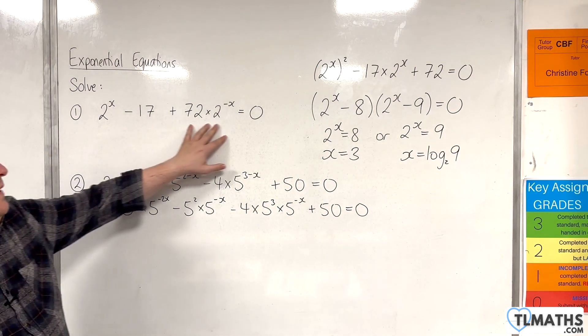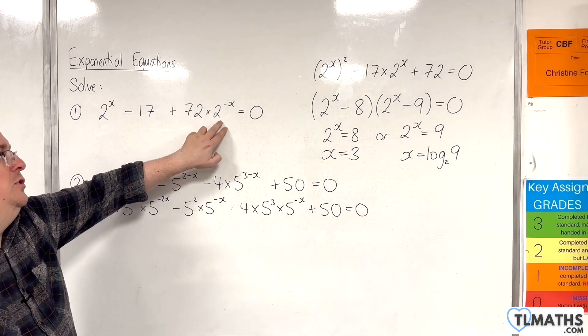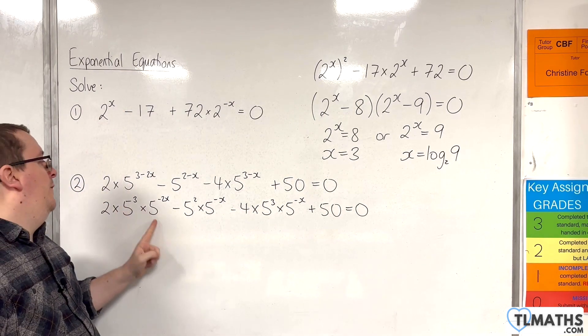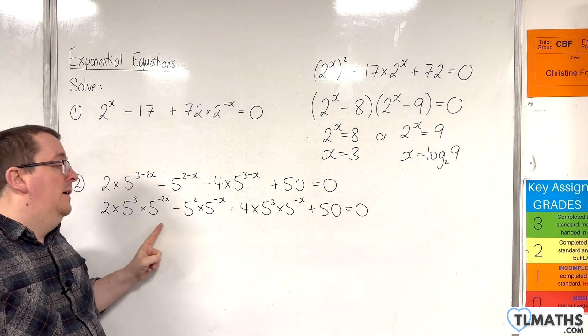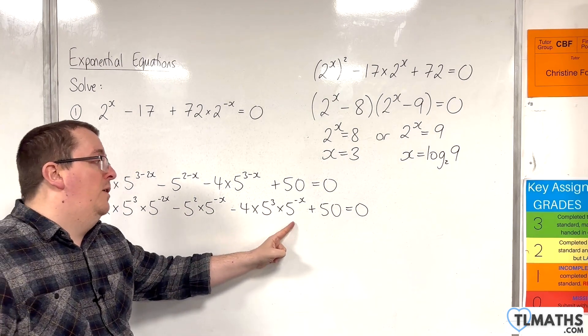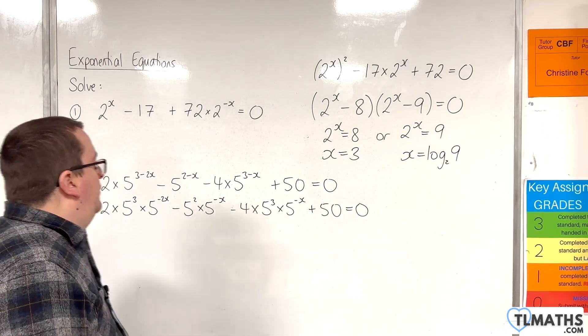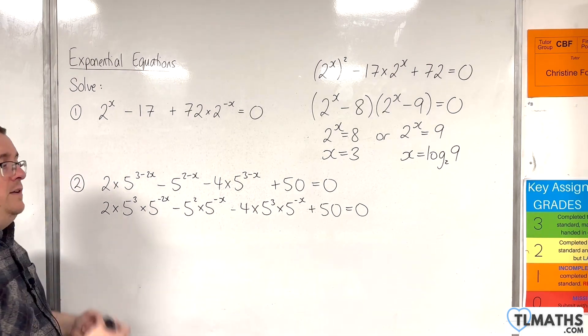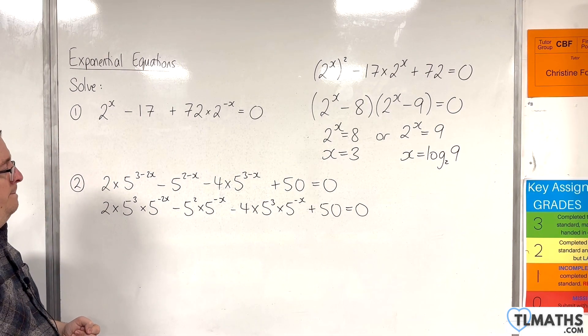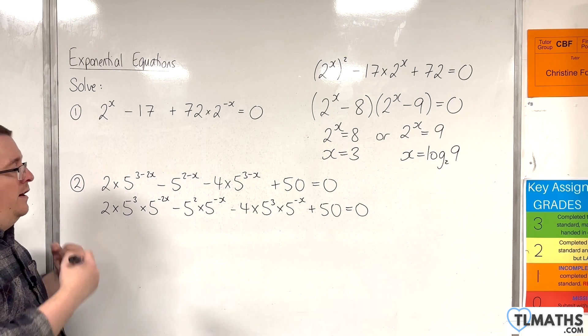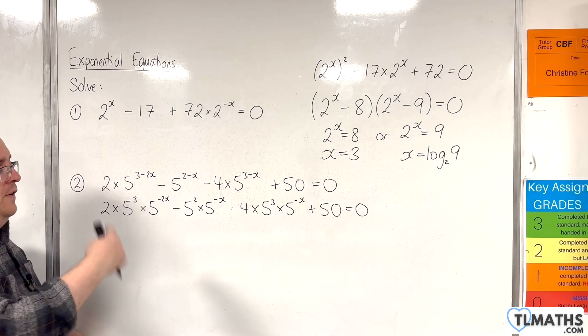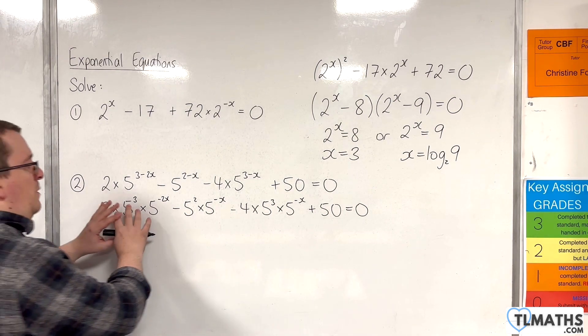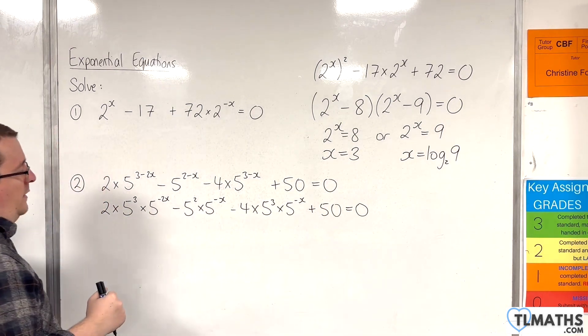Now, in this first example, we spotted the 2^(-x) and multiplied through by 2^x. In this example, we have 5^(-2x), 5^(-x), and 5^(-x). So, what I could do is I could multiply through by 5^(2x). OK? So, the largest power of 5^x, if you like. So, I'm going to multiply through by 5^(2x).